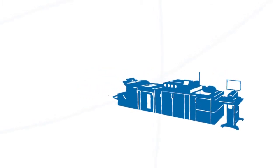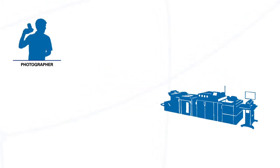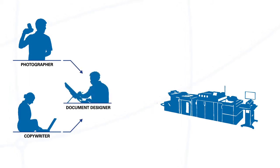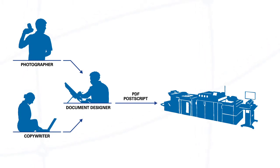Let's look at a typical workflow to create a newsletter. First, you need to get a few pictures from a photographer or other image sources. Next, a copywriter generates the content. Finally, this goes to a designer to compose all these elements using applications such as Adobe InDesign. The designer will then generate a PDF or PostScript file and send it to the printer for printing.